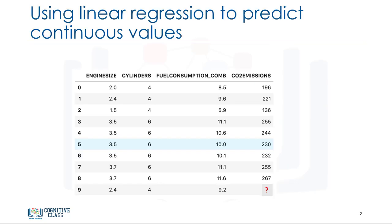Let's take a look at this data set. It's related to the CO2 emission of different cars. It includes engine size, cylinders, fuel consumption, and CO2 emissions for various car models. The question is, given this data set, can we predict the CO2 emission of a car using another field such as engine size?